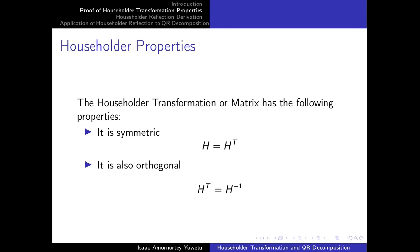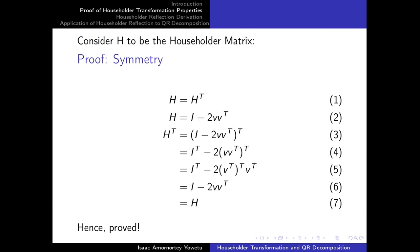We have two properties under the Householder transformation. The first one is that this matrix is symmetric, meaning H should equal H transpose. The second property is that it is orthogonal, meaning H transpose should equal H inverse. We want to now prove the symmetric property. The Householder matrix H is defined by the formula H = I minus 2 times V times V transpose, where V is the Householder vector.